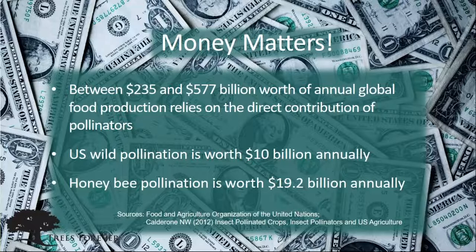A few facts and figures regarding pollinators and their value to society. There's a pretty big estimate of $235 to almost $600 billion worth of annual global food production as the direct contribution of pollinators. When we think about U.S. pollination specifically, we're looking at about $10 billion annually. Furthermore, honeybee pollination is worth about $20 billion annually when you think about both pollination services and the honey produced. These are large numbers and certainly a large industry.